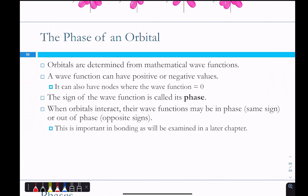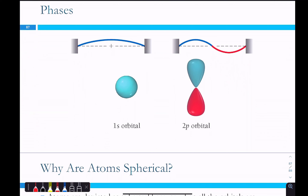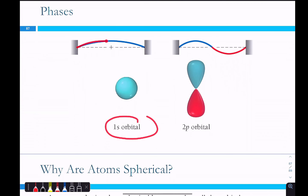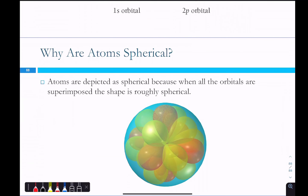Orbitals are determined from mathematical wave functions — Schrödinger's equation defines these wave functions, and they can have phases. The sign of the wave function is called its phase. If orbitals are interacting, their wave functions may be in phase (same sign) or out of phase (opposite sign) — we'll talk about how that applies to bonding later. An s orbital has a single phase; a p orbital has two phases. Atoms are spherical because when we add up all of these orbitals, we've taken up all the space inside a sphere — like packing balloon animals into another balloon.